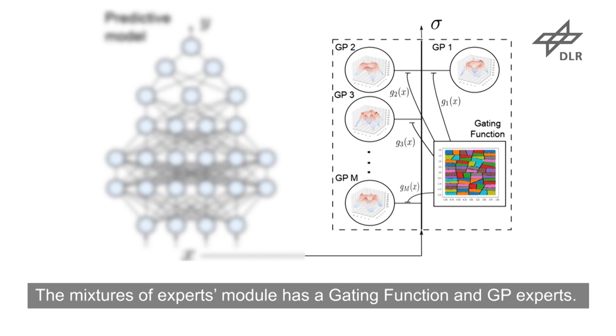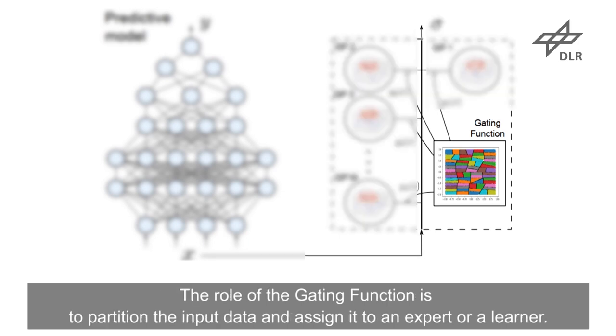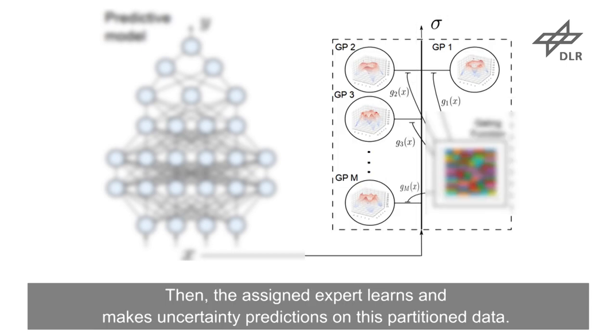The mixtures of experts model has a gating function and GP experts. The role of the gating function is to partition the input data and assign it to an expert or learner. Then, the assigned expert learns and makes uncertainty predictions on this partitioned data.